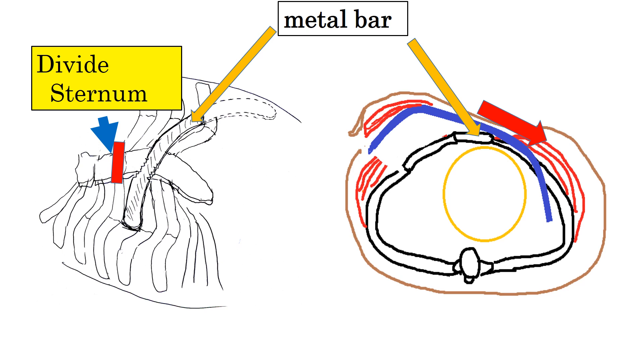We incise the right and left sides of the chest to insert the U-shaped metal bar into the space between the chest wall and muscles. After placing the bar on the surface of the chest wall, we push the protruding part of the chest down to correct its shape.